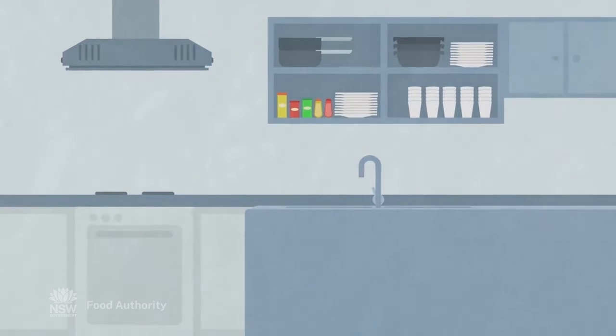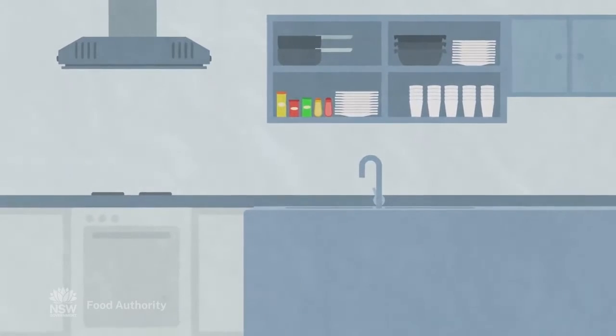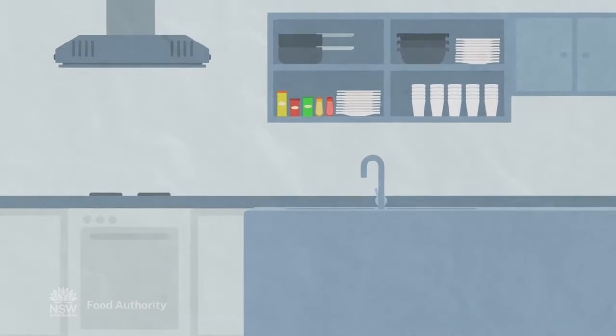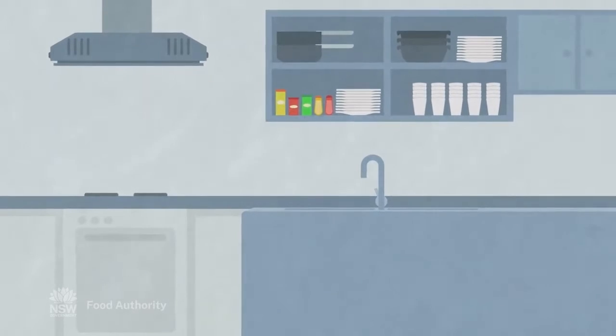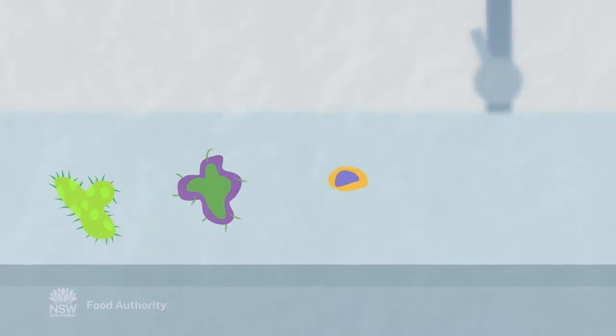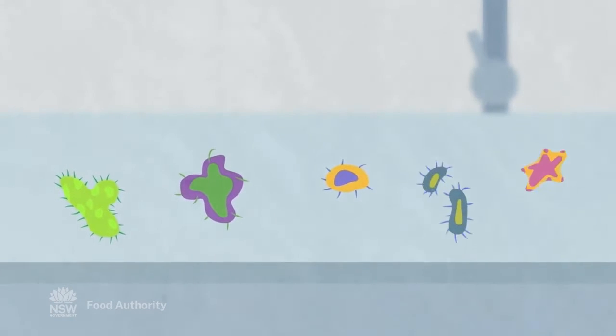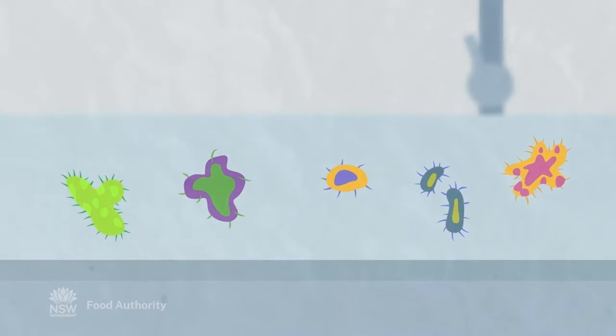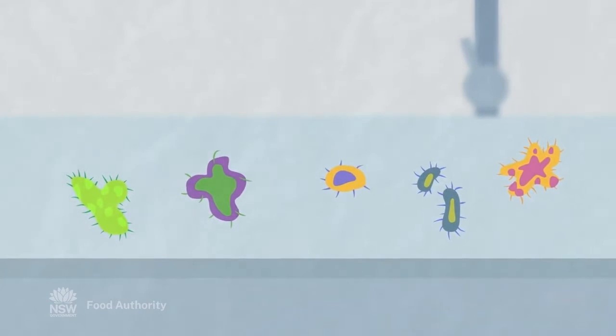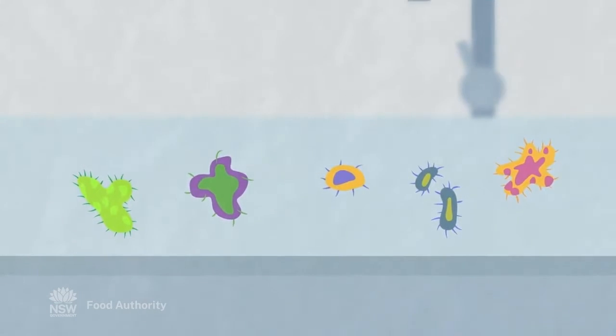It is important to clean and sanitise food utensils and surfaces. Equipment and surfaces may look clean, but unless they are cleaned and sanitised, dirty equipment and surfaces can transfer bacteria or other organisms onto food, causing illness in the customer and may result in legal action against the business owner.